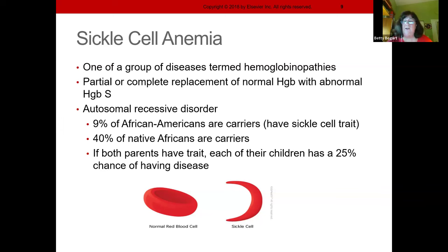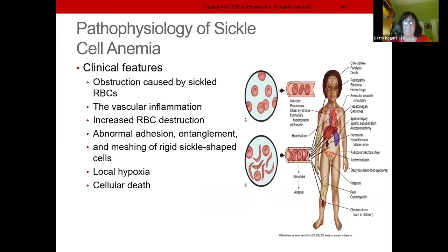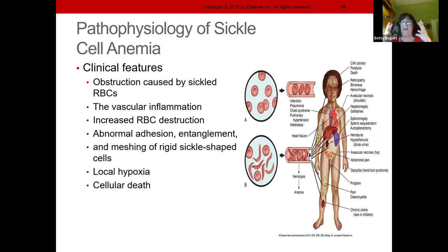Sickle cell: if both parents carry just the trait, the child has a 25% chance of sickle cell anemia. It's more prevalent in African Americans and native Africans. Sickle-shaped cells travel through blood vessels and get stuck at bifurcations with smaller vessels, building on top of each other and blocking flow. This causes swelling, nerve pain, and distally — cell death and hypoxia because blood can't flow past the obstruction.